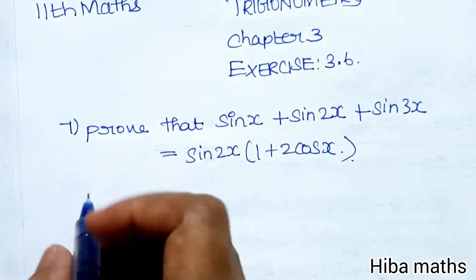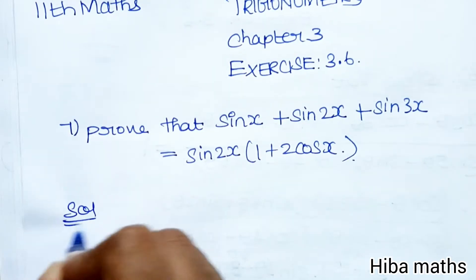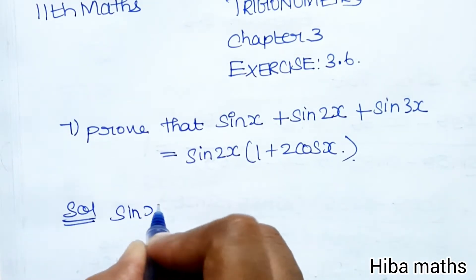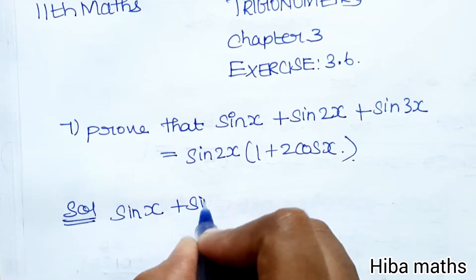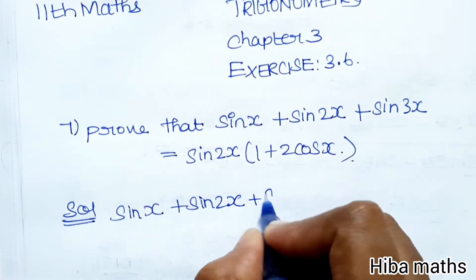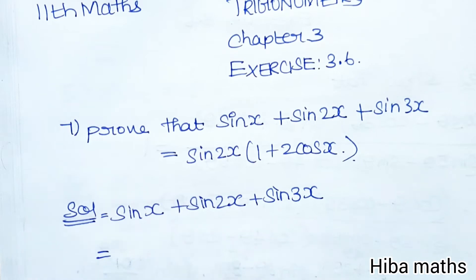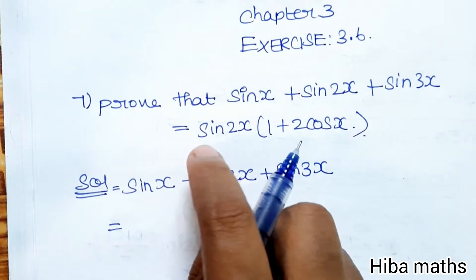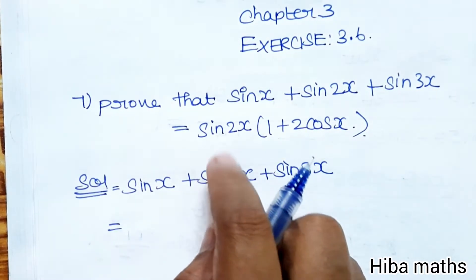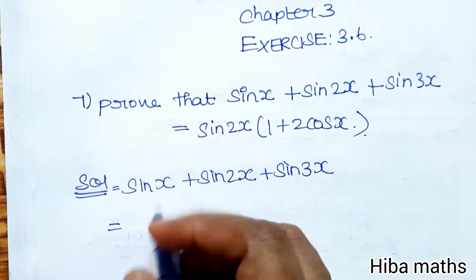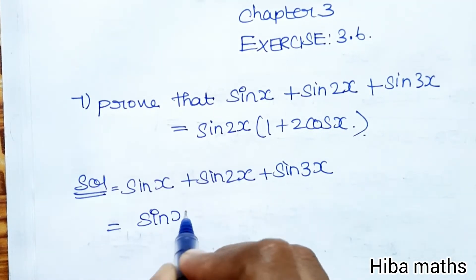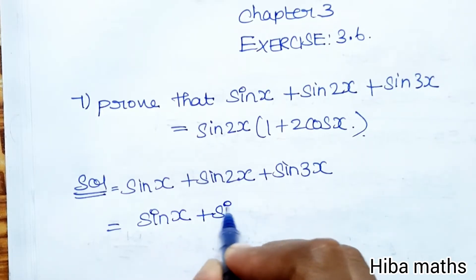For the solution, we have sin x + sin 2x + sin 3x on the LHS. We need to prove this equals the RHS. The RHS has sin 2x, so first we'll take the two terms sin x + sin 3x, then add sin 2x.